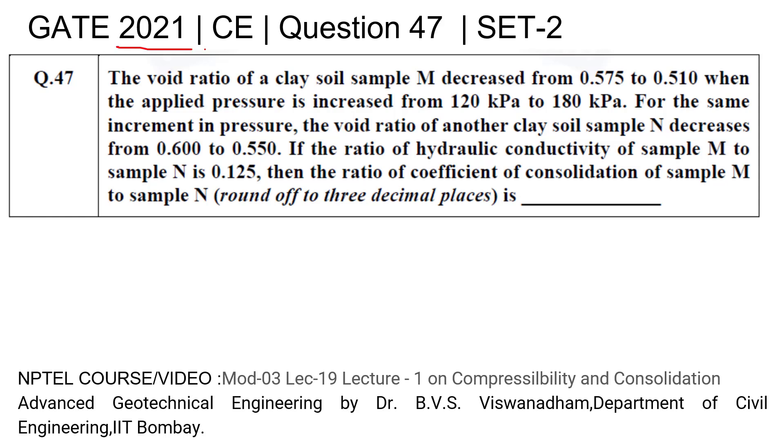GATE 2021 civil engineering question number 47, SET-2. The void ratio of a clay soil sample M